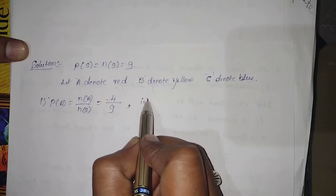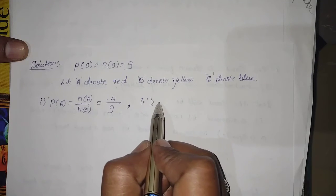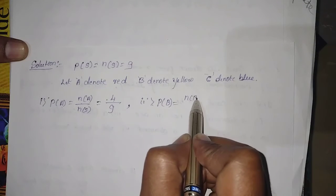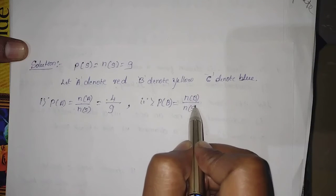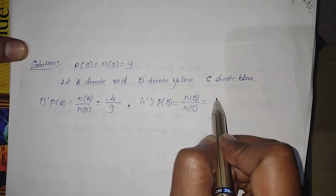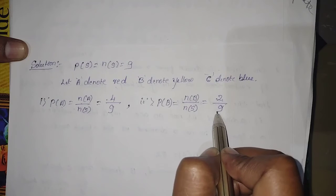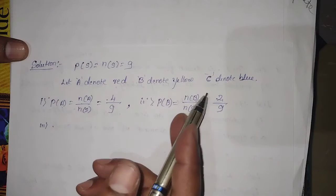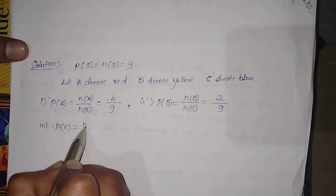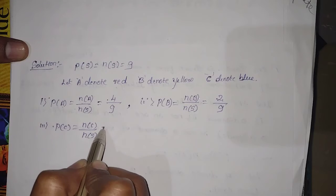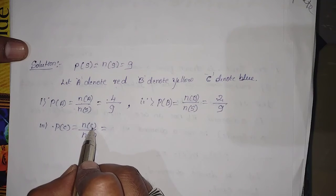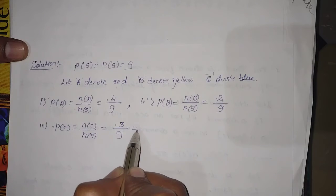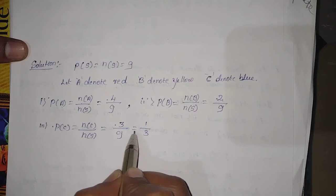For the second question — yellow: P(B) = n(B) / n(S) = 2/9, since there are 2 yellow discs out of 9. For the third question — blue: P(C) = n(C) / n(S) = 3/9 = 1/3, since there are 3 blue discs.